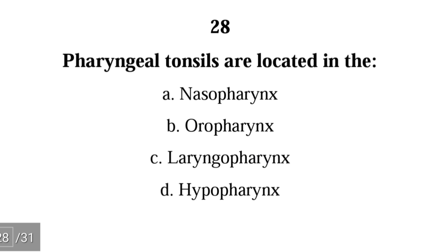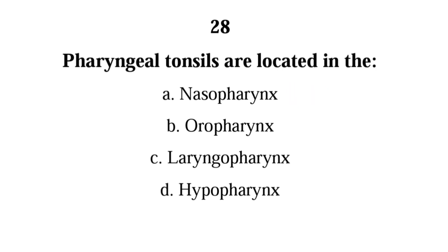Number 28. Pharyngeal tonsils are located in the: A. nasopharynx. The correct answer is A, nasopharynx. Pharyngeal tonsils are located in the nasopharynx, while palatine tonsils are located in the oropharynx.